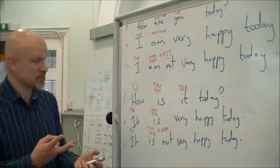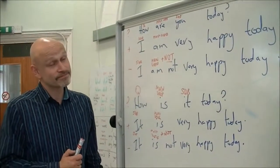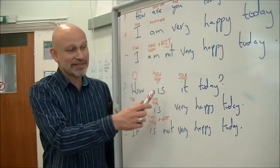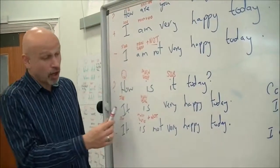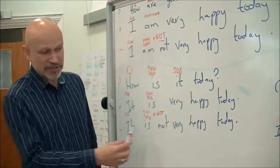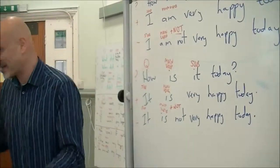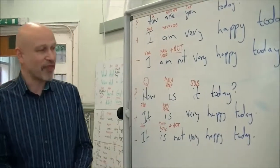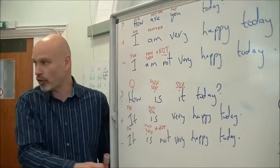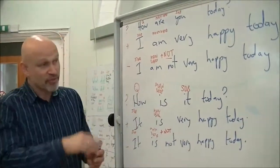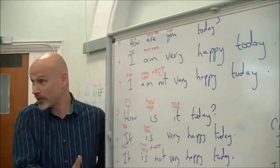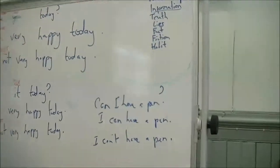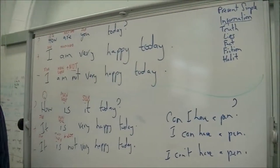'How is it today? It is very happy today.' To put it into context — how is your dog today? Well, it's very happy today, or it's not very happy today — it hurt its leg, or it had to go to the vet. Basically, in the present we just have to use the verb 'to be' and then an adjective, a noun, or an adjective and a noun. There's no other verb here. We use present simple for the same reason, just using the verb 'to be.'